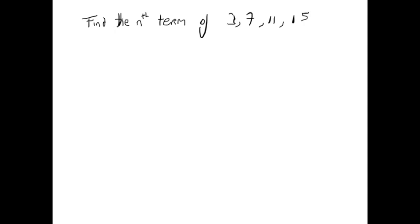So you might be asked a question like this: find the nth term of this sequence. The nth term is basically a formula by which we can find out what the nth term of a particular sequence is. For example, you might be asked to find what is the 20th term in this sequence. You could list all the items out until you get to the 20th term, but that would be rather a waste of time. There is a better way of doing this, and that is using the nth term formula.